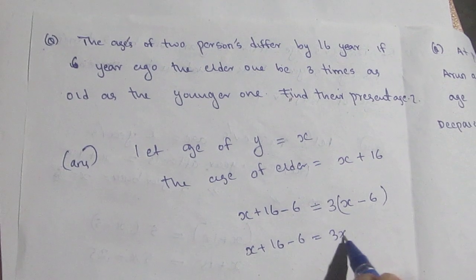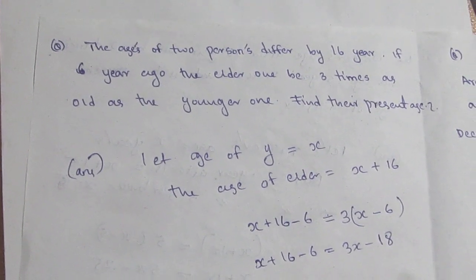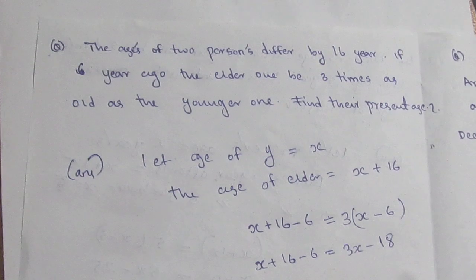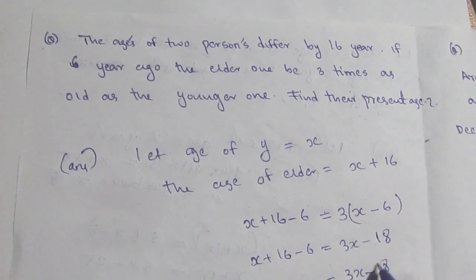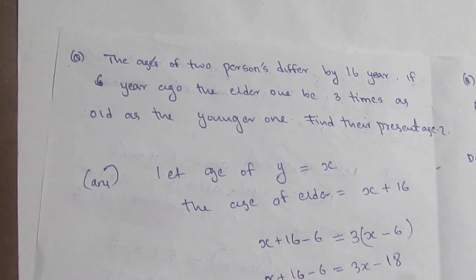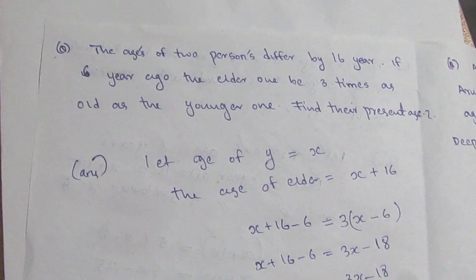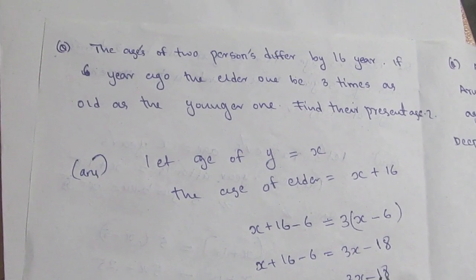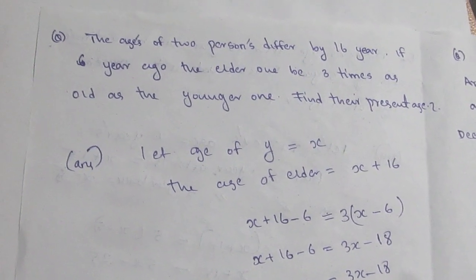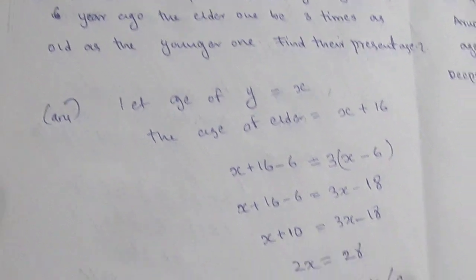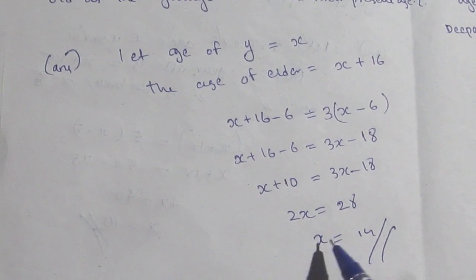Six years ago the elder one was three times the younger, so we get: X plus 16 minus 6 equals 3 times (X minus 6), giving X plus 10 equals 3X minus 18. This simplifies to 2X equals 28, so X equals 14. This is the right answer.